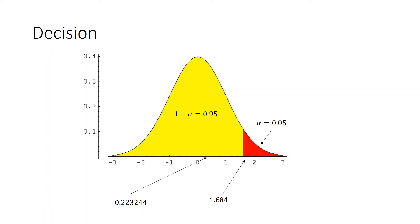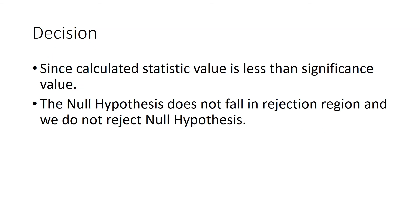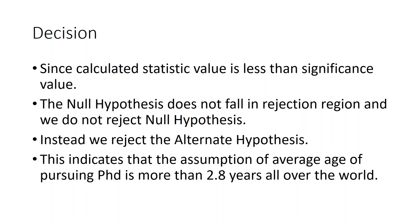We accept the null hypothesis. The null hypothesis states that the average time for a PhD student to complete their doctorate is greater than 2.8 years — that assumption was true. The person claiming the alternate hypothesis — that PhD can be finished in less than 2.8 years — was wrong. Since the calculated statistic value is less than the significance value, we do not reject the null hypothesis and we reject the alternate hypothesis.